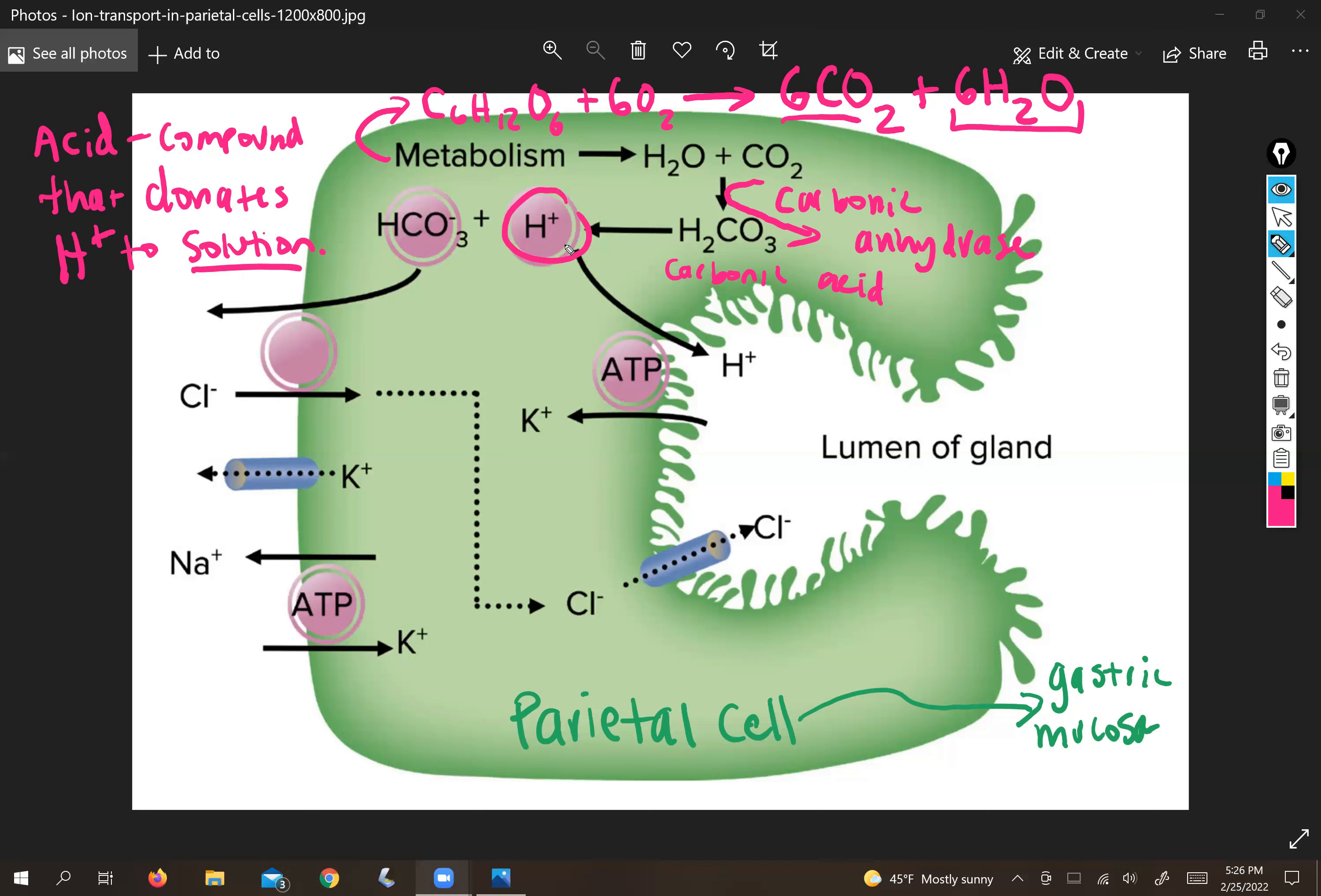But again, similar to bicarbonate, this is not useful when it's inside of the cell. We have to put it in the lumen. So we need to exchange it for something else. So again, we're balancing our charges by exchanging one cation for another.